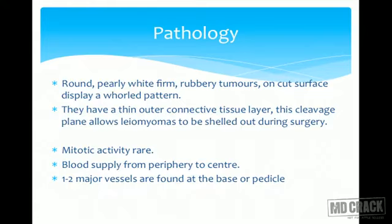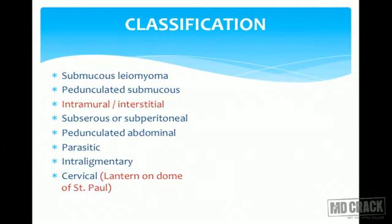Mitotic activity is rarely seen. Blood supply to the fibroid is always from periphery to center — the blood vessel runs from periphery towards the center. So at the capsule there is maximum blood supply, and at the center blood supply is less. One to two major vessels are found at the base or pedicle of the fibroid.